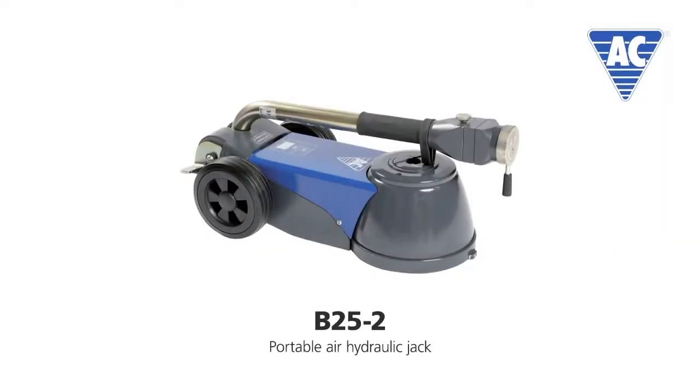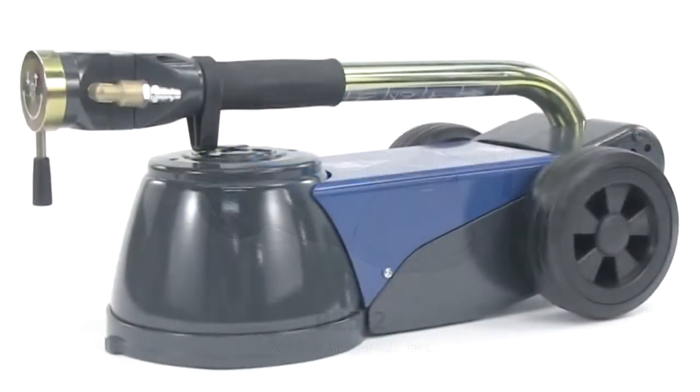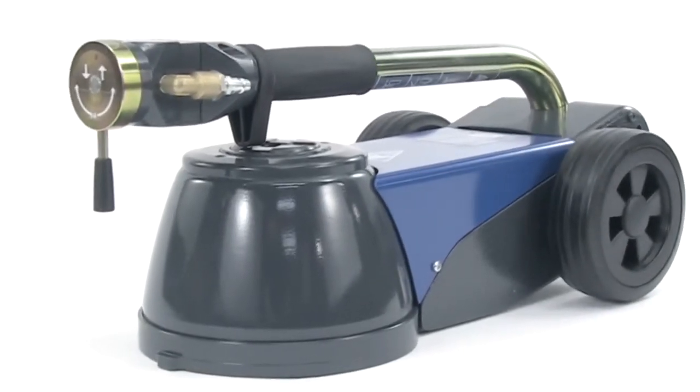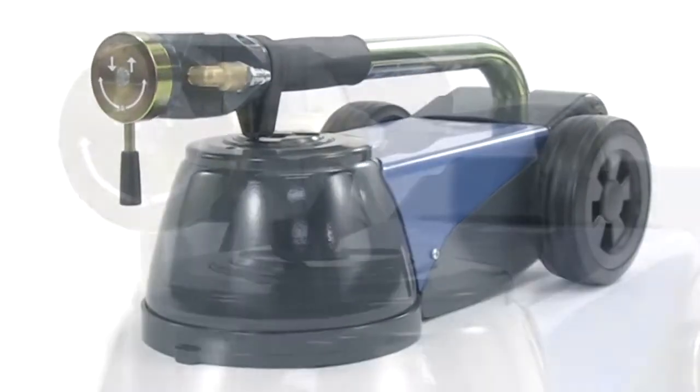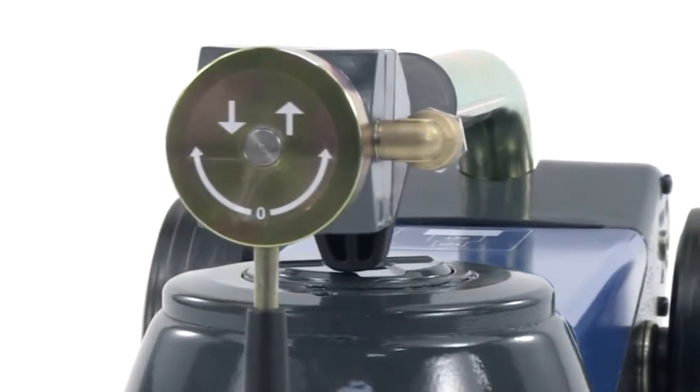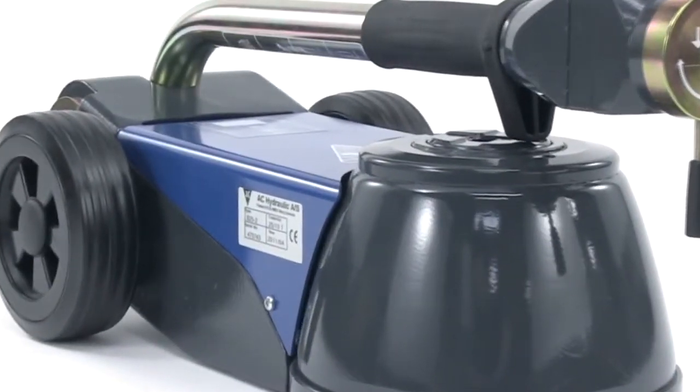The B25-2 is the portable air hydraulic jack from AC Hydraulic. Like all other products from AC Hydraulic, the B25-2 is a 100% Danish product, manufactured to the highest quality standards.